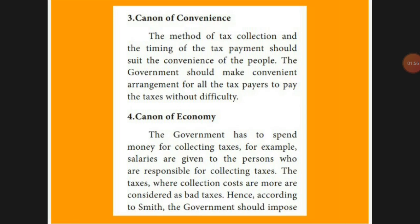Next is the Canon of Convenience. Canon of Convenience means the tax collector has to specify the timing up to which you have to pay the tax, how much you have to pay, and where you have to pay. Such arrangements should be in place so that the taxpayer finds it easy to pay without difficulty.